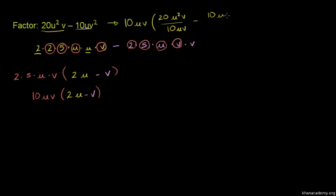The expression 10uv is factored out from both terms. From 20u squared v we get 2u, and from 10uv squared we get v.